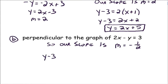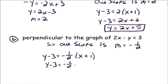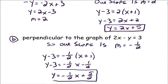Now we have a point and the slope, so we can find the equation. y minus 3 equals negative 1 half times (x plus 1), since it's x minus negative 1. Writing that in slope-intercept form: y minus 3 equals negative 1 half x minus 1 half. Adding 3 to both sides gives y equals negative 1 half x plus 5 halves. If you were to graph this line, it would pass through (-1, 3) and be perpendicular to the graph of 2x minus y equals 3.